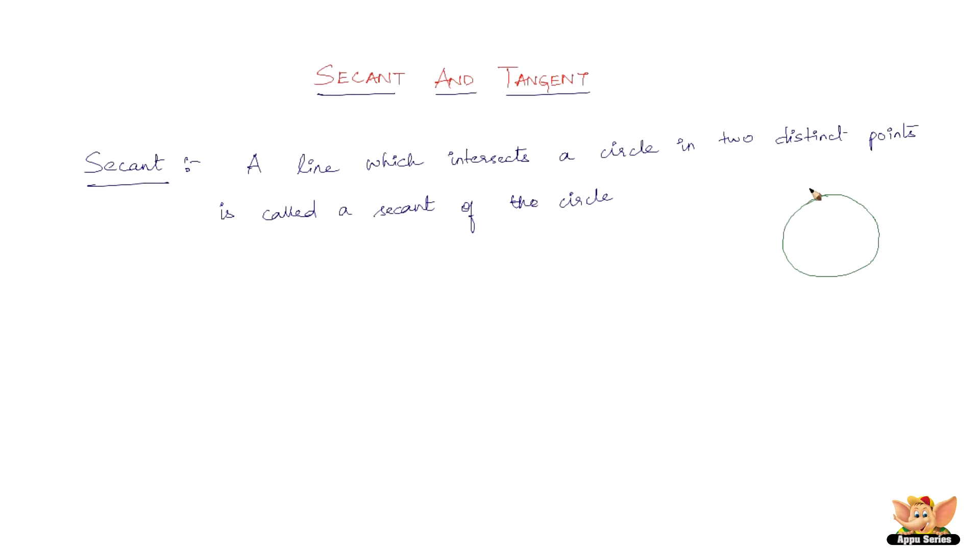Say we draw something like this. Line AB. Now this line AB intersects this circle in two distinct points. That is the point here and the point here. So two distinct points. So this line can be called as a secant.